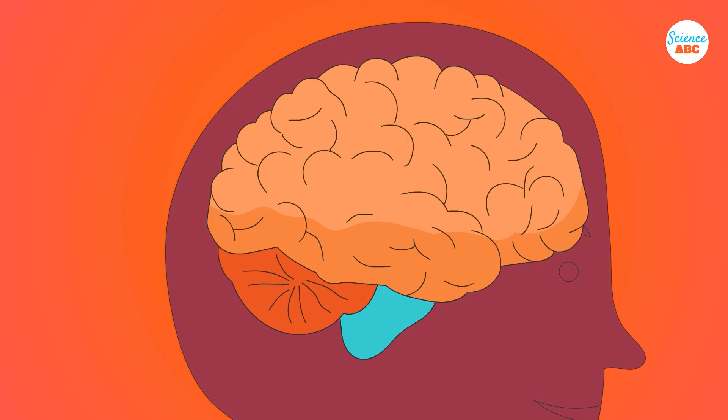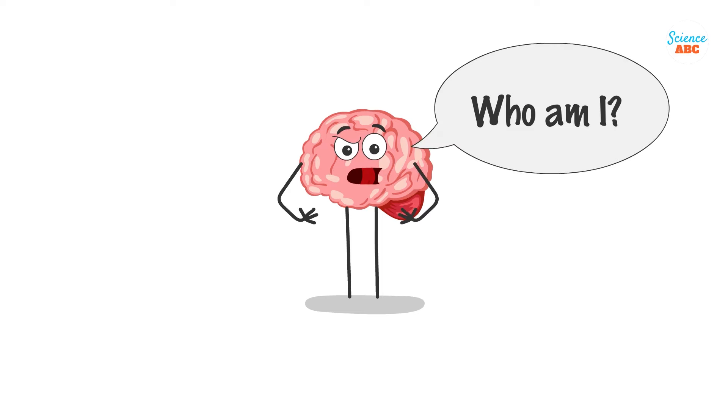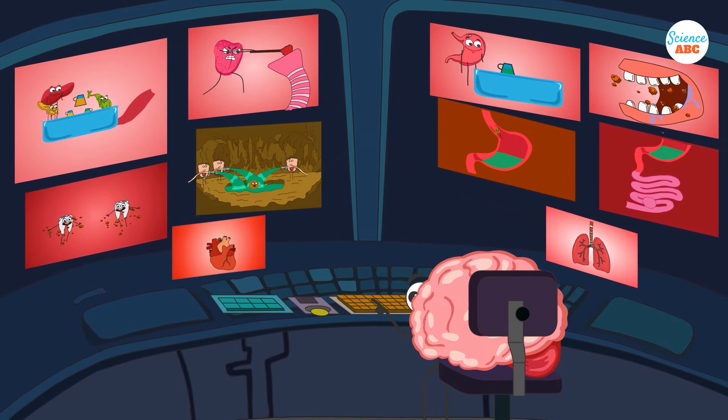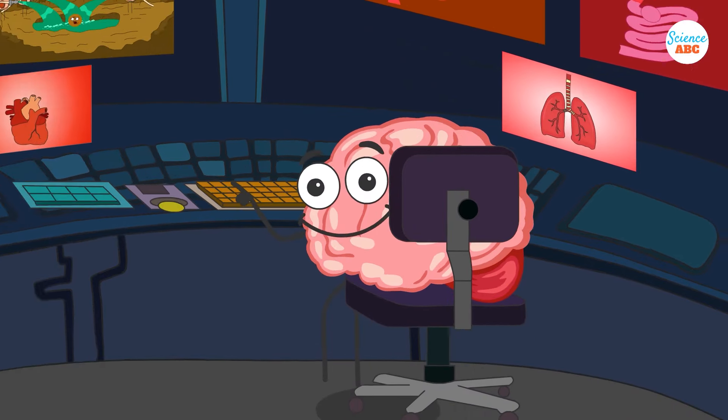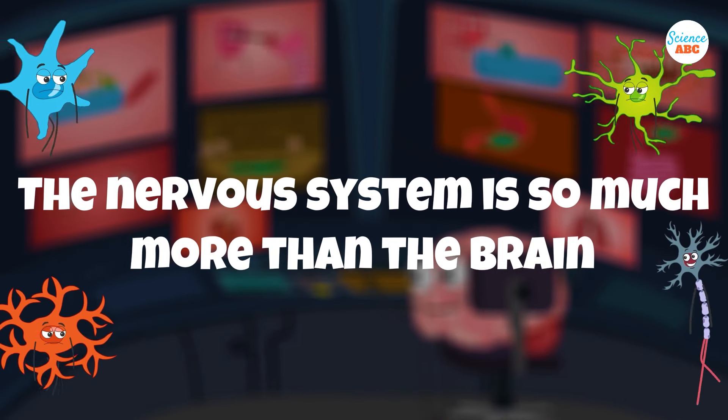For most of us, the nervous system is almost synonymous with the brain. We think of the brain as the seat of consciousness and the master controller of the body, calibrating every organ and their particular jobs, right? Well, not quite.